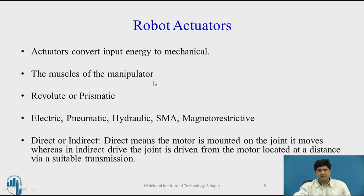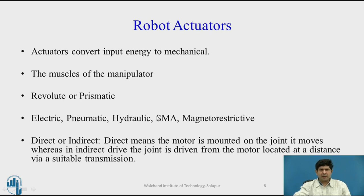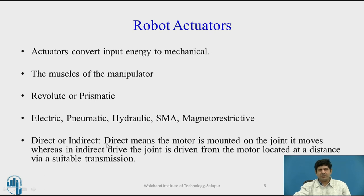Actuators are often called the muscles of the manipulator. These may be revolute or prismatic, depending upon the configuration of the robot. The most popular choices are electric, pneumatic, hydraulic, shape memory alloys, and so on — with these three being by far the most popular. Electric drives are by far the most popular. Sometimes you may have what is called a direct or indirect configuration, if the motor is driving the joint through a linkage or through a transmission.